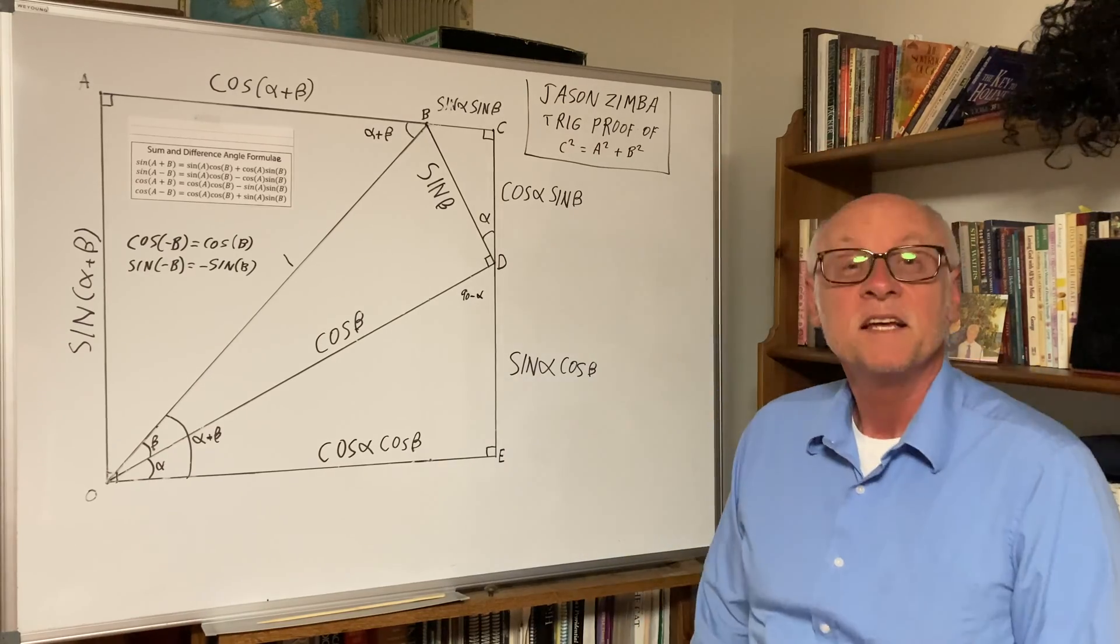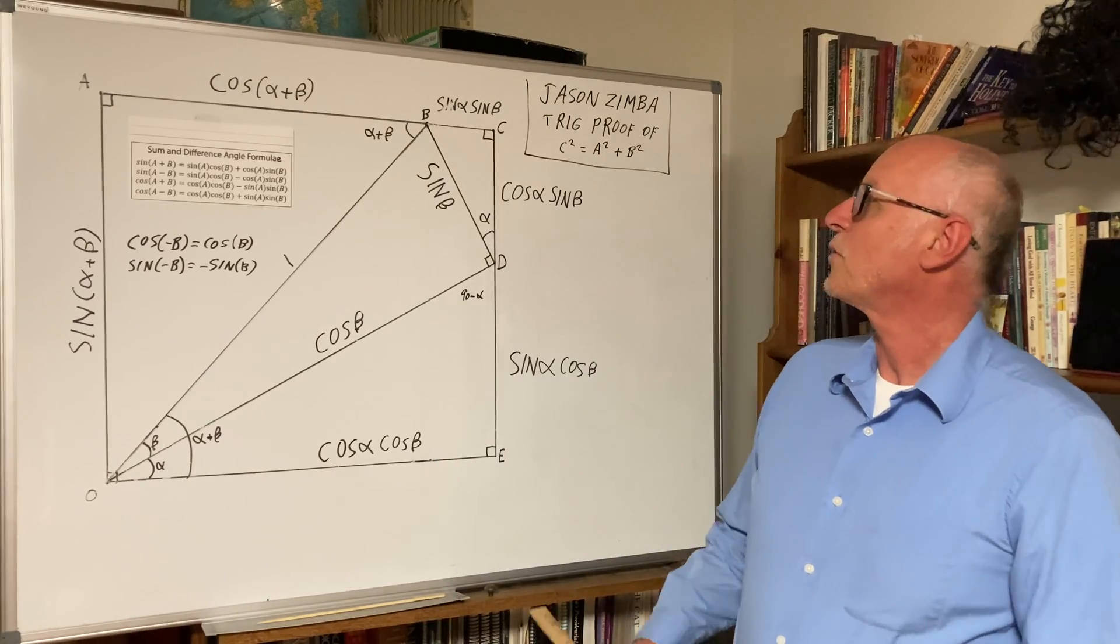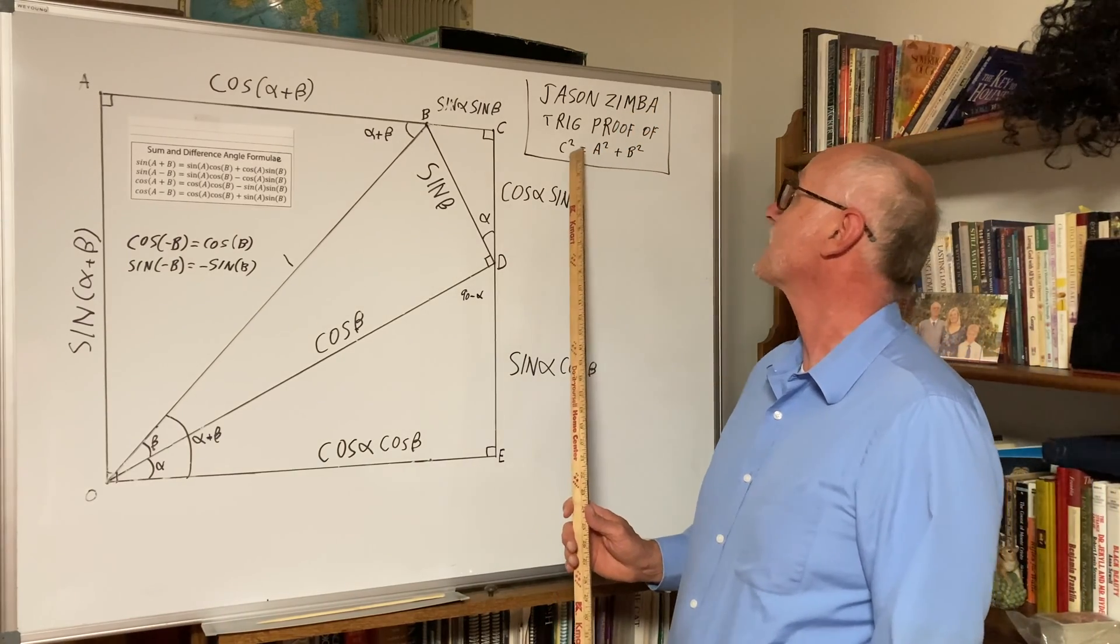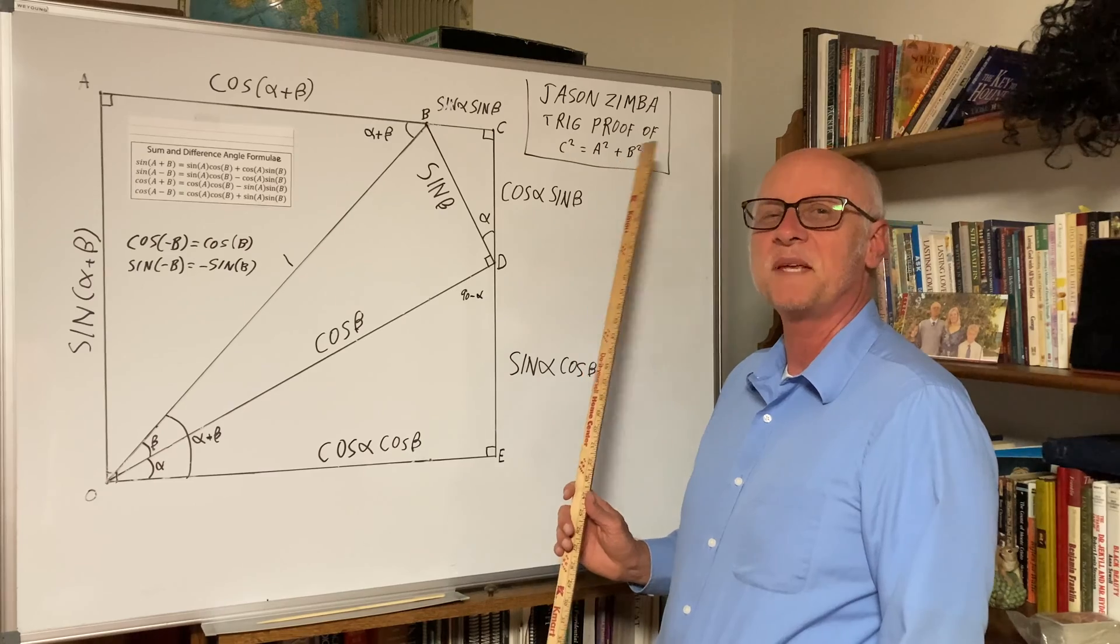Welcome back, quadrature fans. Today we will prove Jason Zimba's trig proof of C squared equals A squared plus B squared.